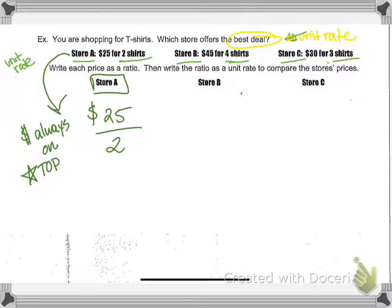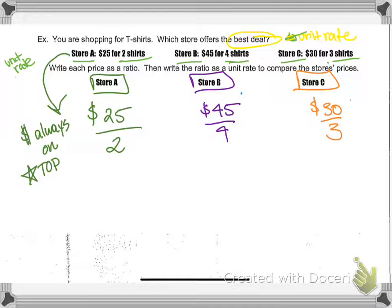So $25 to two shirts. And what I'm going to do is I'm going to write that out for every store. So store B and C, I have $45 for four and $30 for three. I'm just writing out that ratio to see what they're giving me. And now I need to compare them. It's hard to compare to figure out what's the best price just by looking at those ratios as they are.